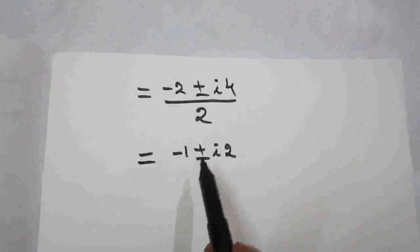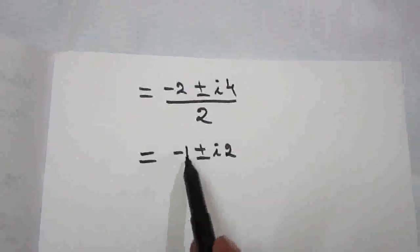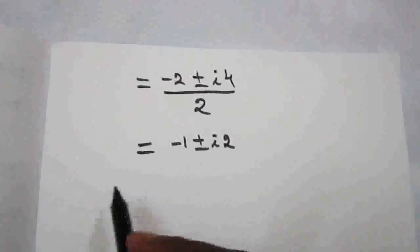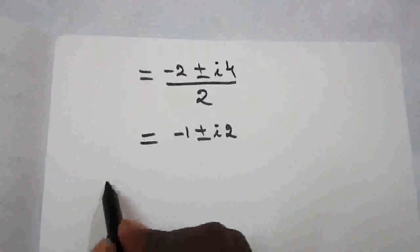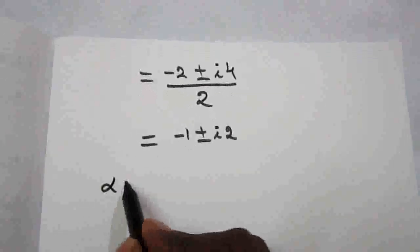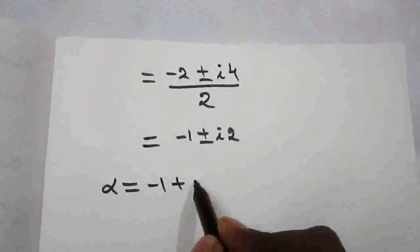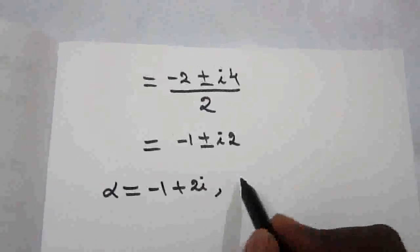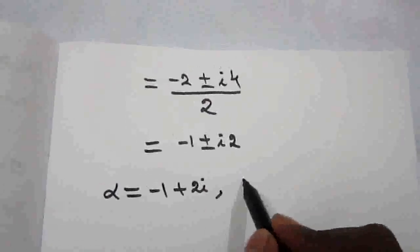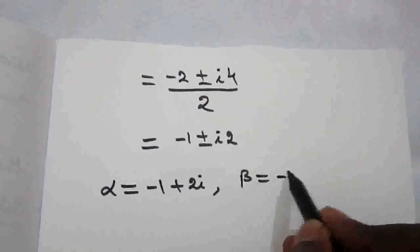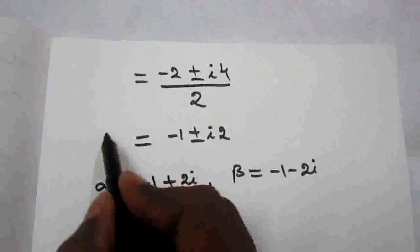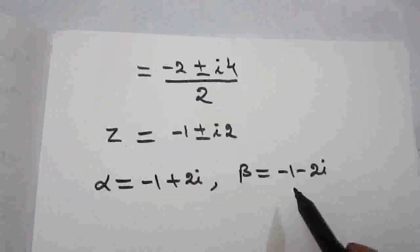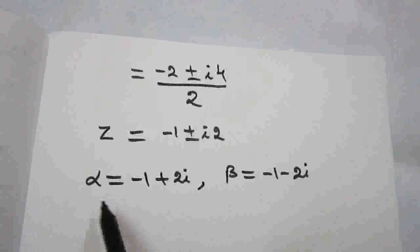Simplifying by cancelling 2: z = -1 ± 2i. So there are two singular points: α = -1 + 2i and β = -1 - 2i.